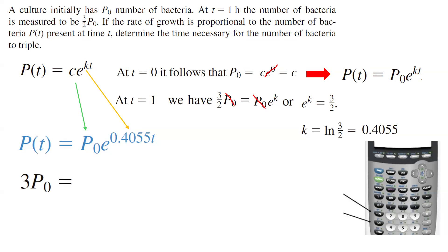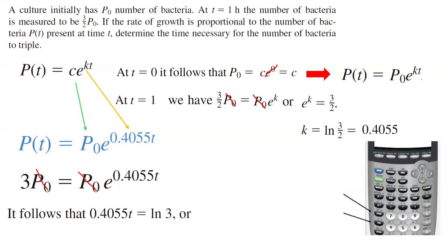The population tripling means it becomes three times the initial population. So three times p sub zero equals p sub zero times e to the power 0.4055t. Canceling p sub zero from both sides gives three equals e to the power 0.4055t. Taking the ln of both sides, 0.4055t equals ln of 3, so t equals ln of 3 divided by 0.4055.